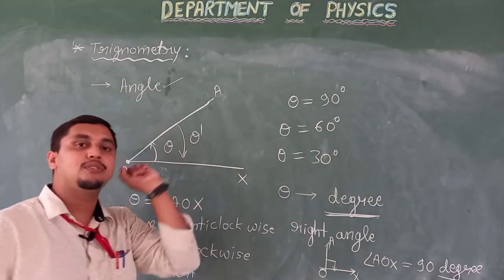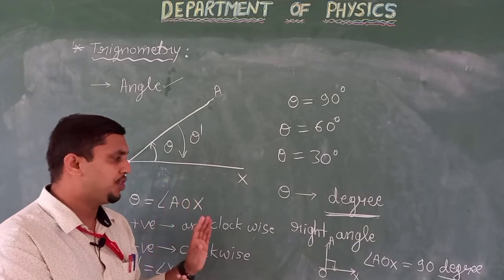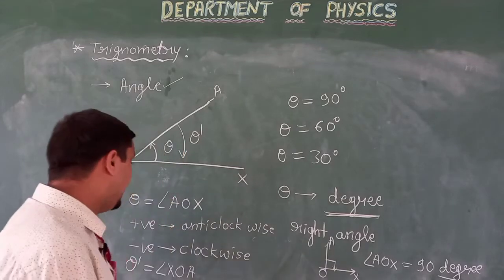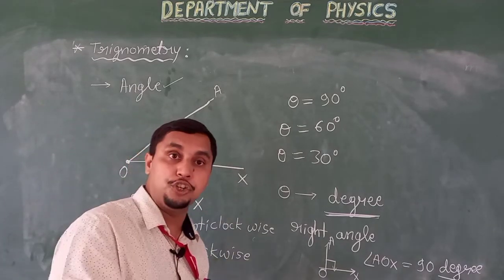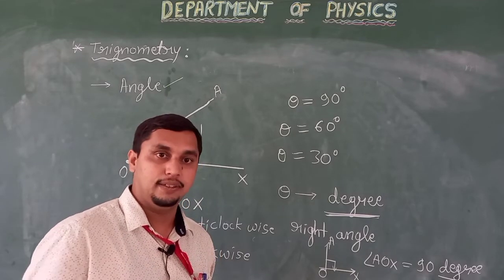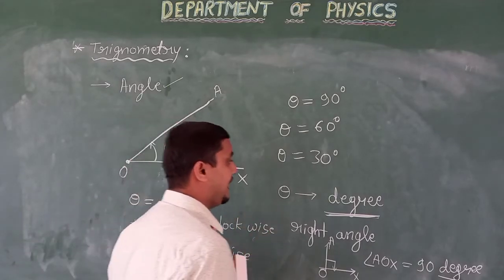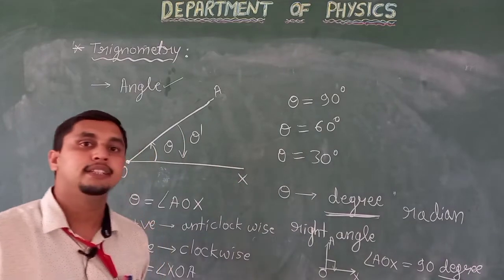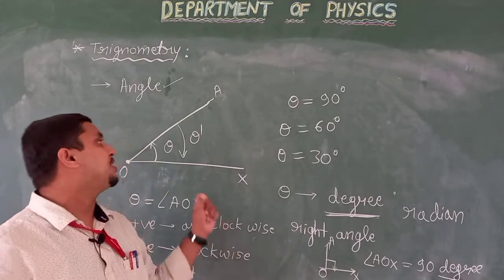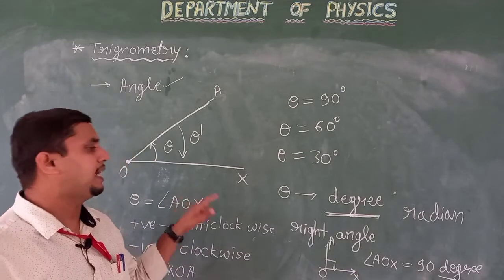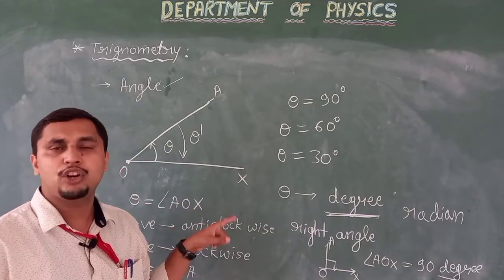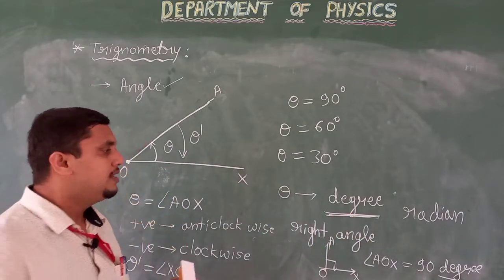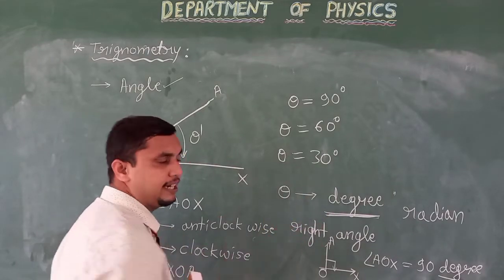Usually we measure the angle in degrees, but in physics there is another unit for measuring the angle — that is radian. Radian is another unit for the measurement of an angle, particularly for circular measurement. For circular measurement, we use radian. Later we will see the relation between degree and radian.